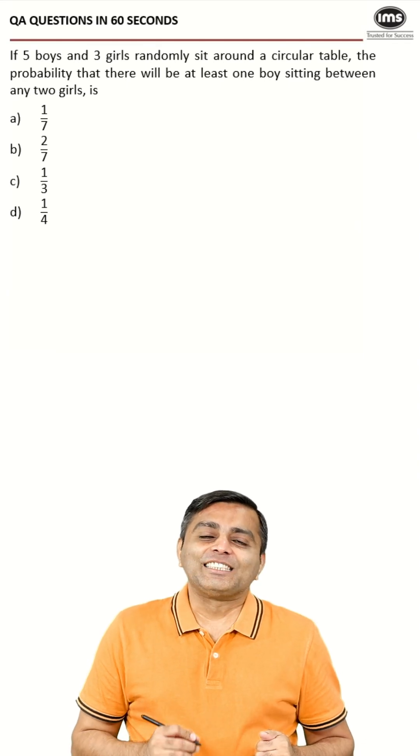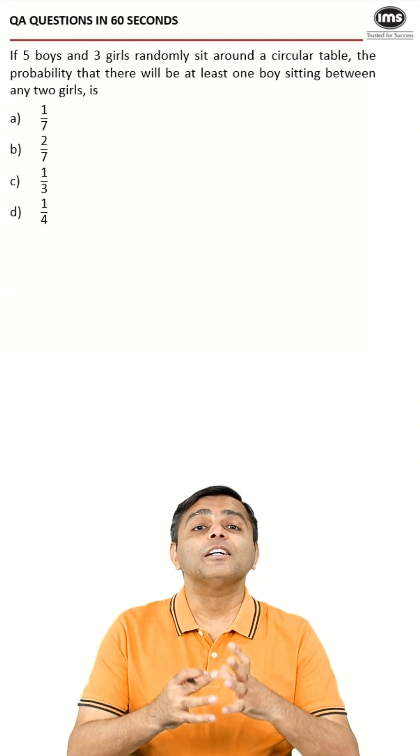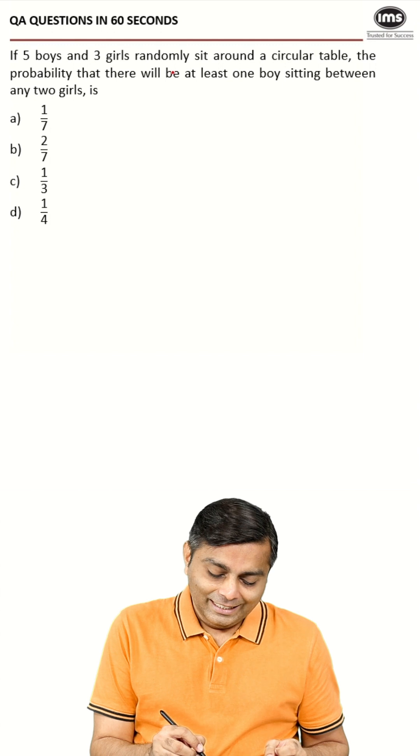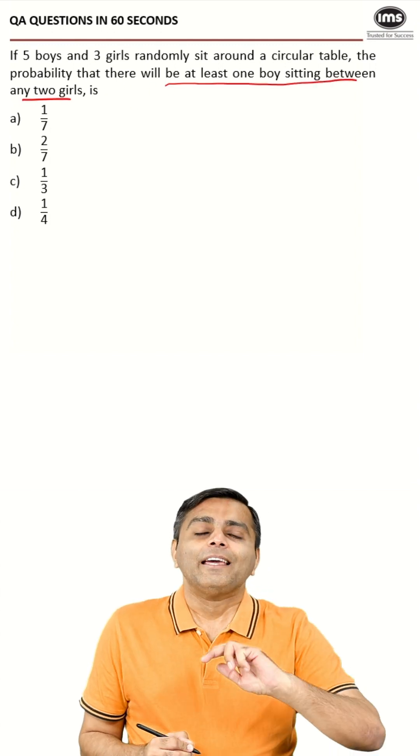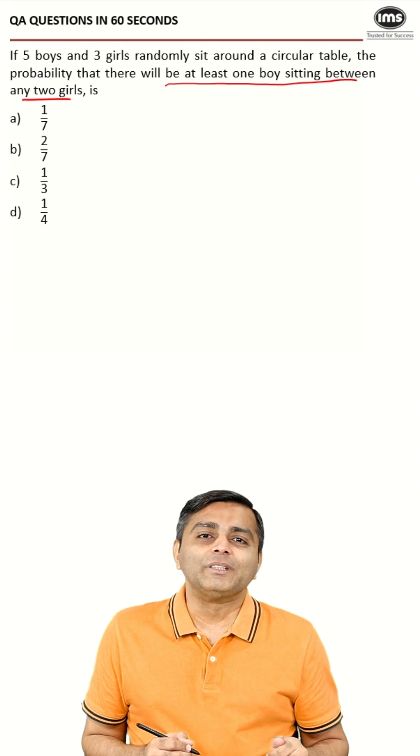Okay, so the question for the day is a classic PNC question. Five boys and three girls sitting around a circular table. They have asked us the probability that there will be at least one boy sitting between any two girls. In other words, they are saying no two girls should be sitting together.